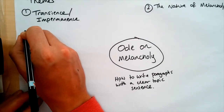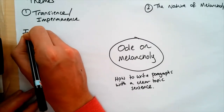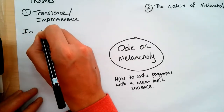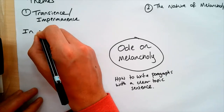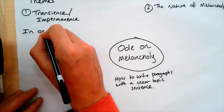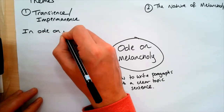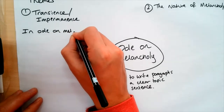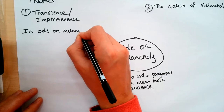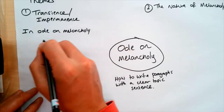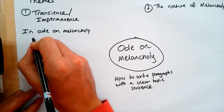The second theme is the nature of melancholy. This refers to the way that melancholy is presented in the poem — for example, the way in which it's personified as a beautiful goddess.